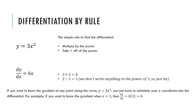What that tells us is that if we want to know the gradient at any point along the curve y equals 3x squared, we just have to substitute the x coordinate we're interested in into the differential equation. For example, if you want to know the gradient when x equals 1, you know that the differential is dy/dx equals 6x — you just substitute in your coordinate. So we want to know the gradient when x equals 1: 6 times 1 is 6. So the gradient when x equals 1 on the curve y equals 3x squared is equal to 6.